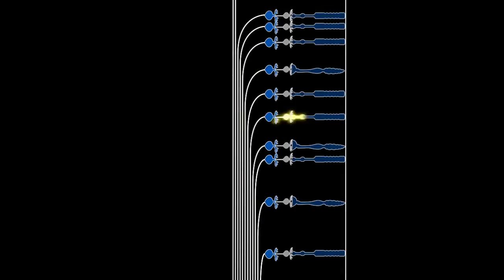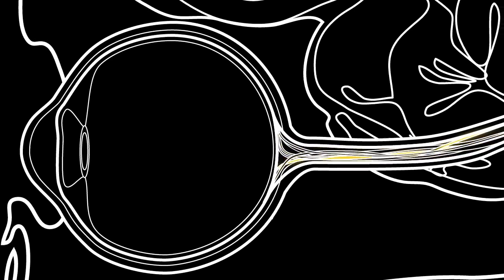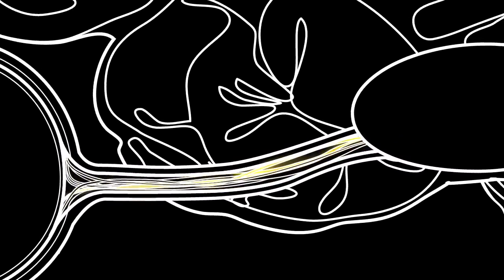Photoreceptors reside deep within the retina and are responsible for detecting visible light. They convert light into electrical signals. These signals, the beginnings of visual information, flow to other cell layers in the retina. Within a fraction of a second, these signals reach the retinal ganglion cells, which then carry them through the optic nerve to the brain.